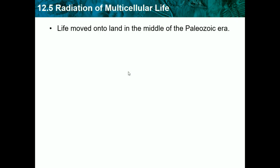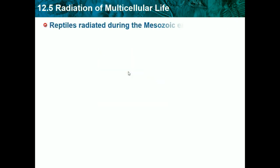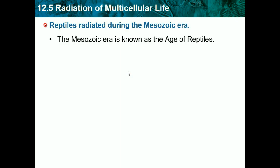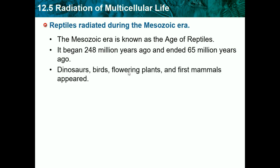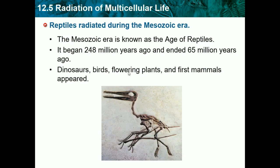Life moved onto land in the middle of the Paleozoic era. Reptiles radiated during the Mesozoic era, which is known as the Age of Reptiles — it began 248 million years ago and ended 65 million years ago. Dinosaurs, birds, flowering plants, and the first mammals appeared in this era.